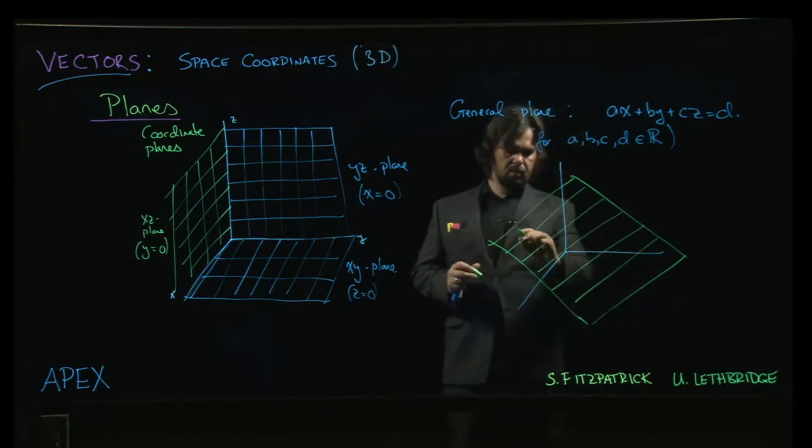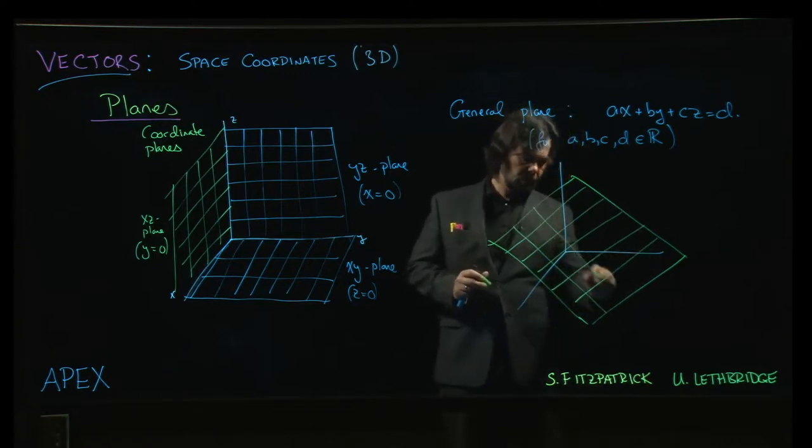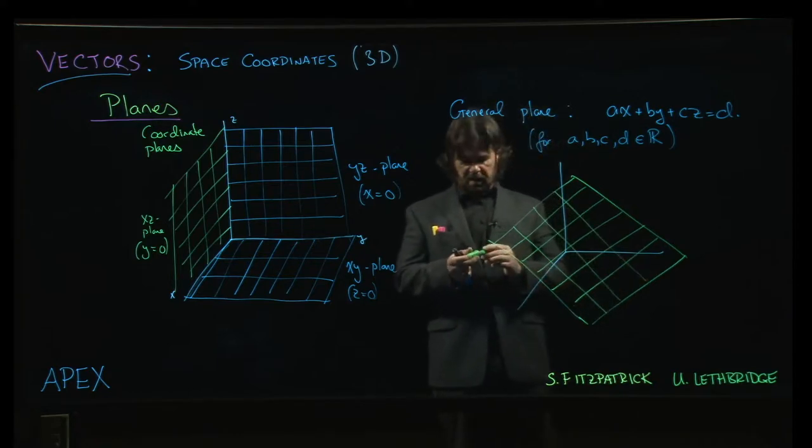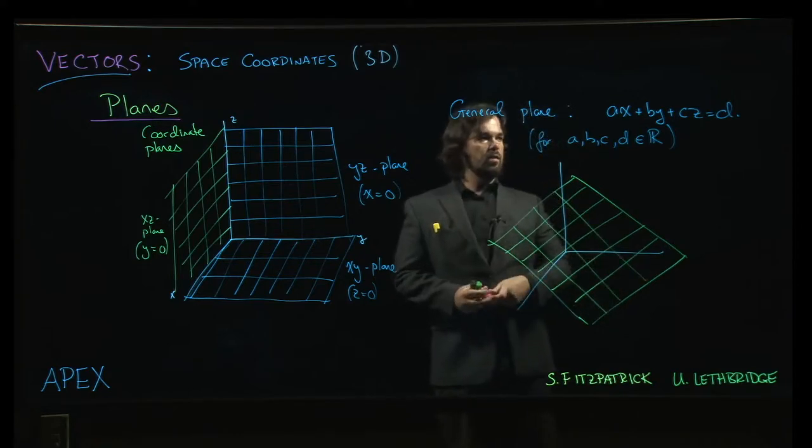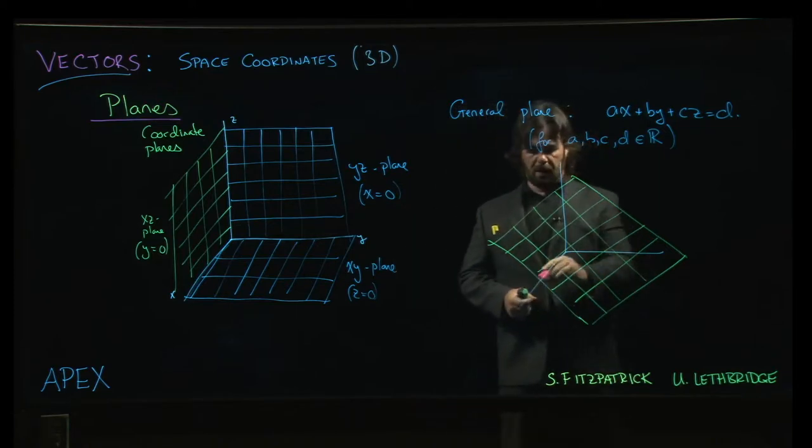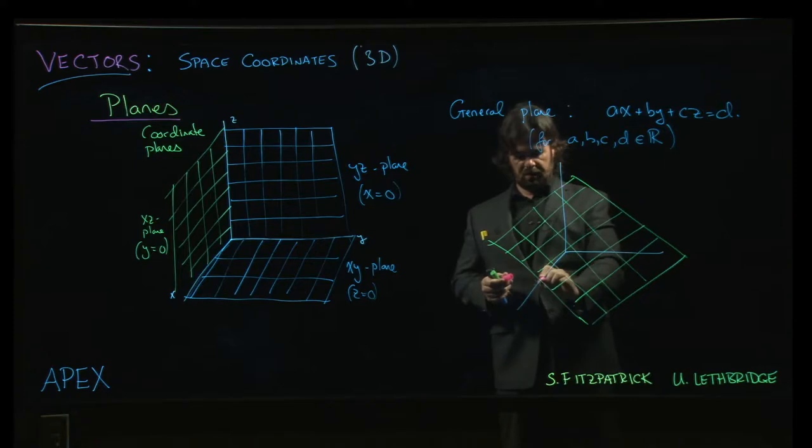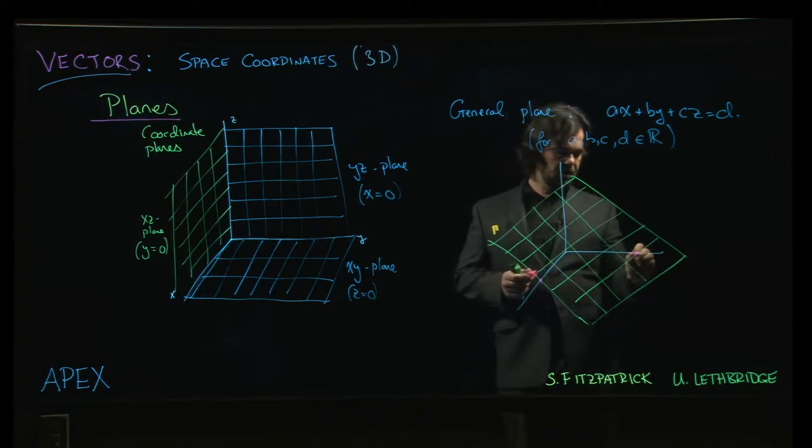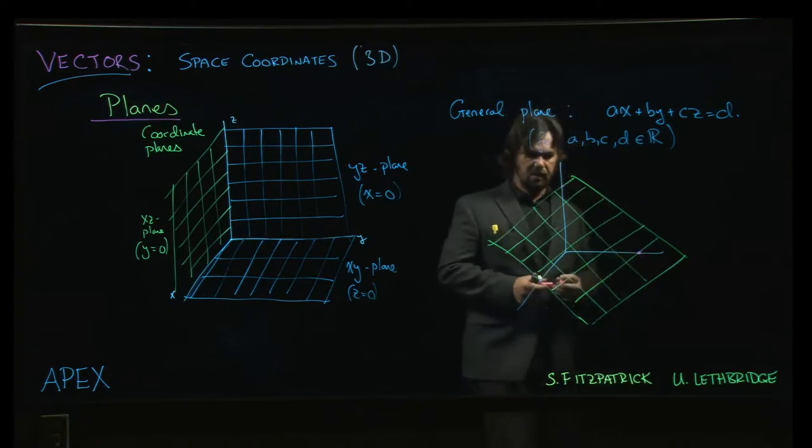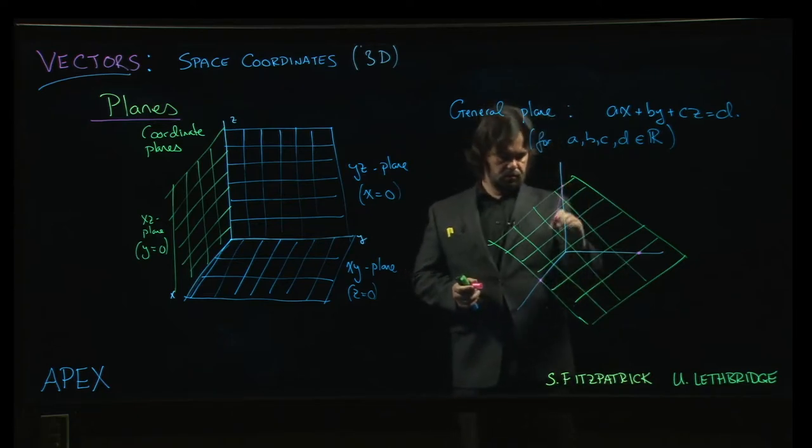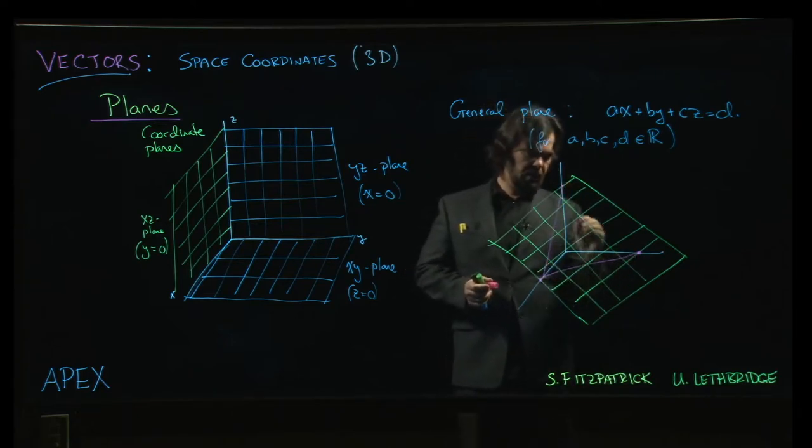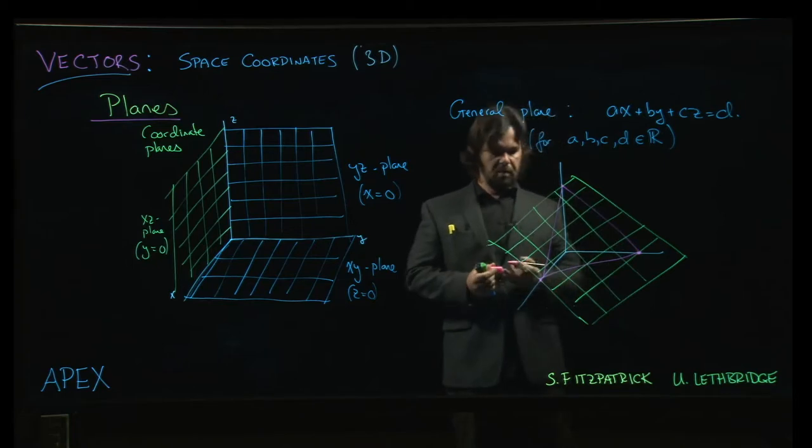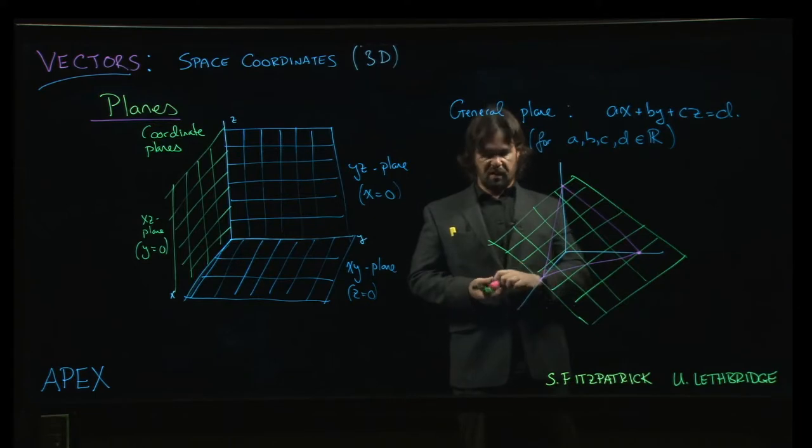Now, one of the things that you can do to sort of get some kind of idea of what's going on with the plane is you can figure out the intercepts of the plane with the coordinate axes. You can figure out where does the plane actually meet the three axes. And you kind of get a little triangle there formed by those points. And that triangle, of course, lies in the plane. That is often helpful for understanding how a plane is oriented in space.